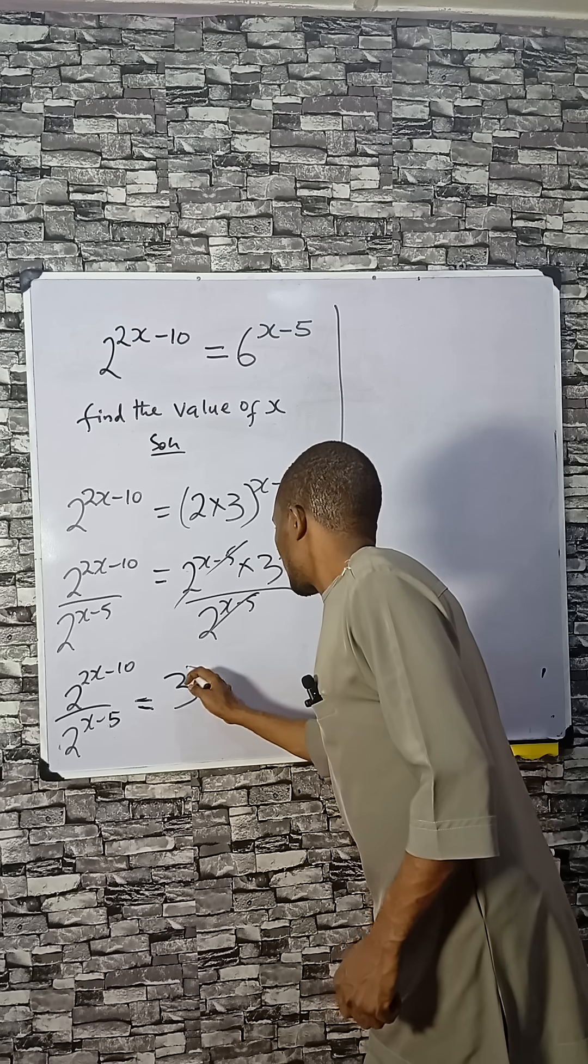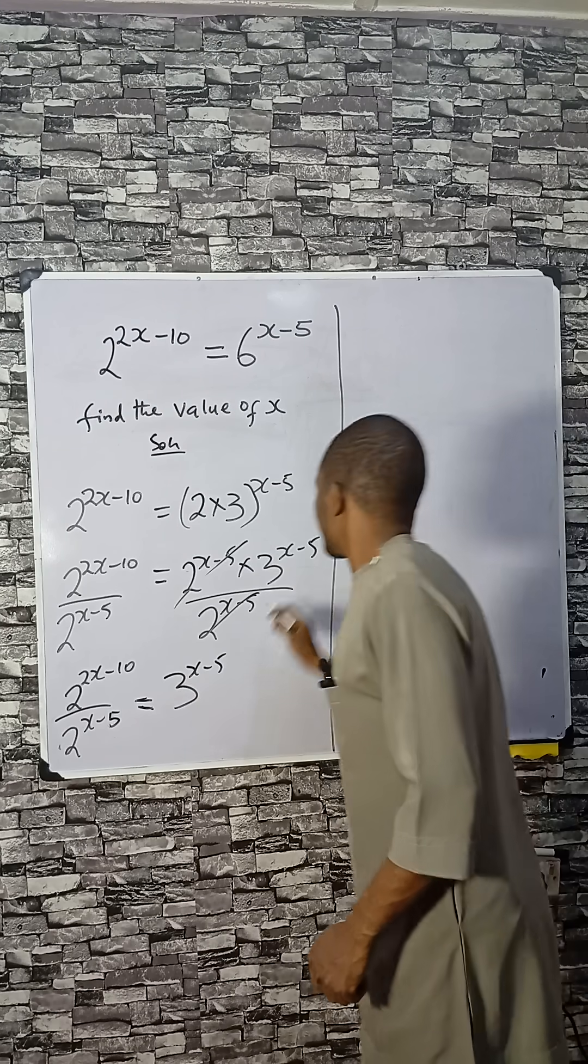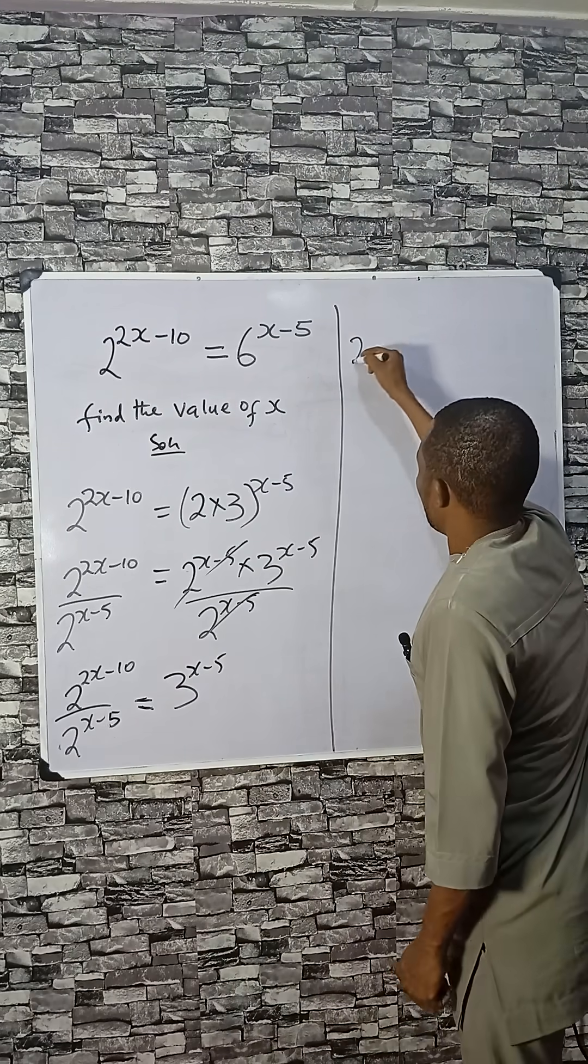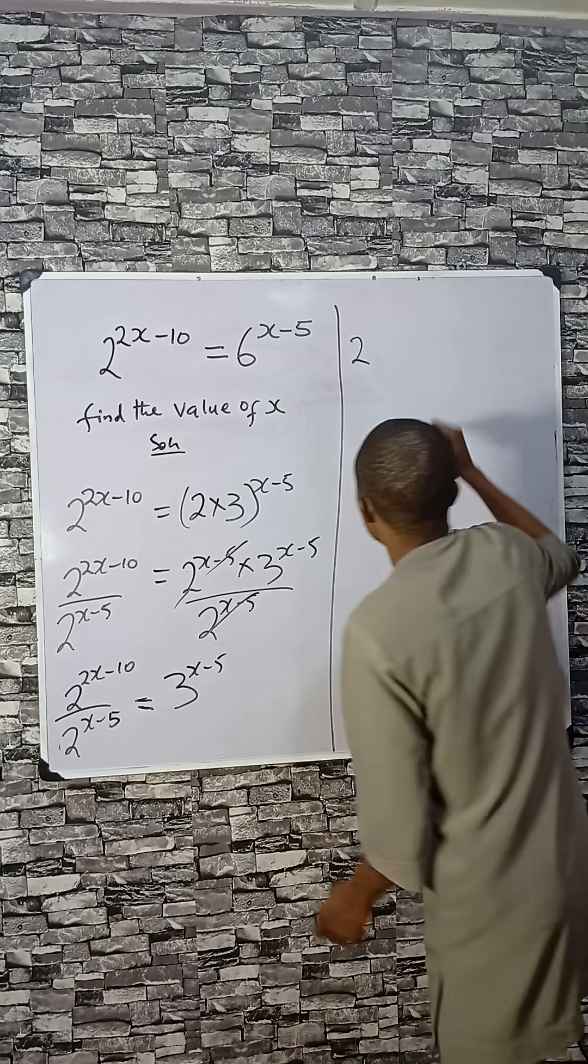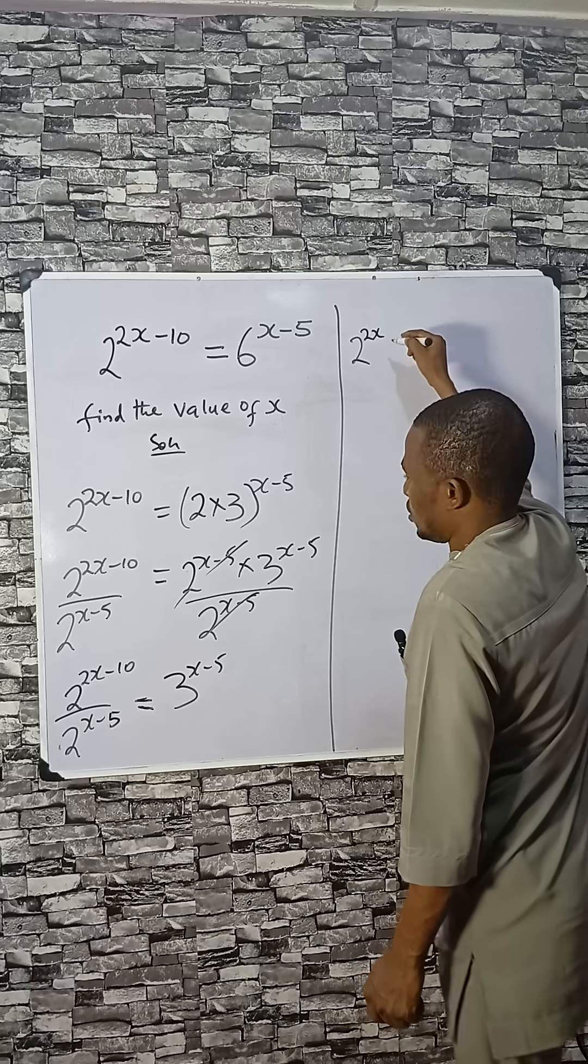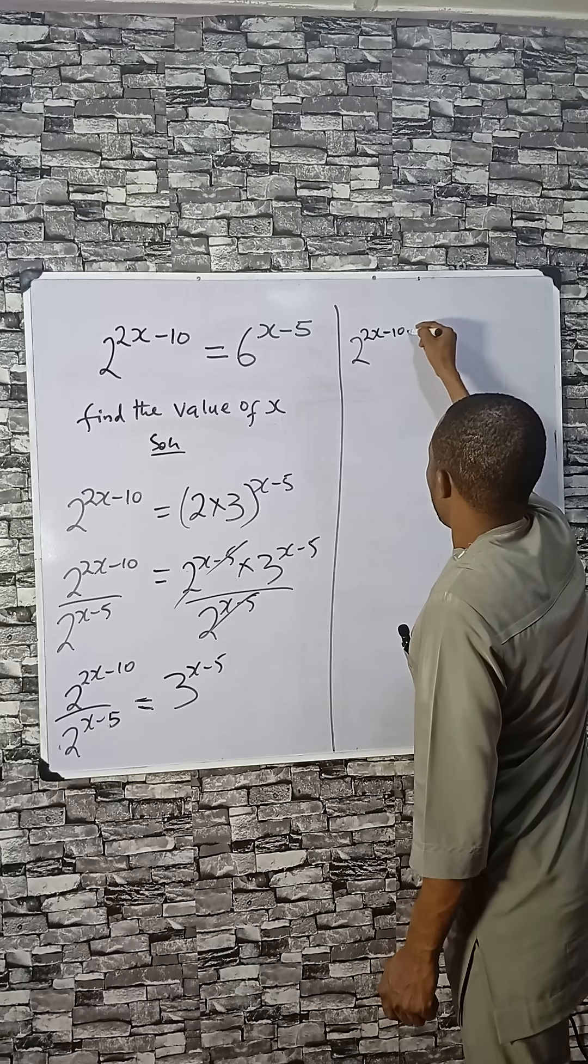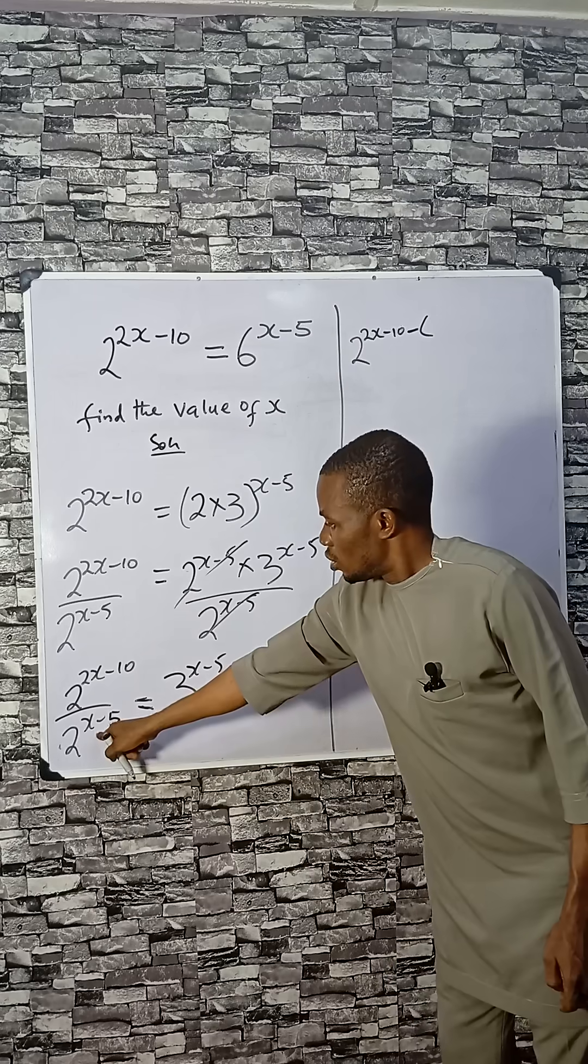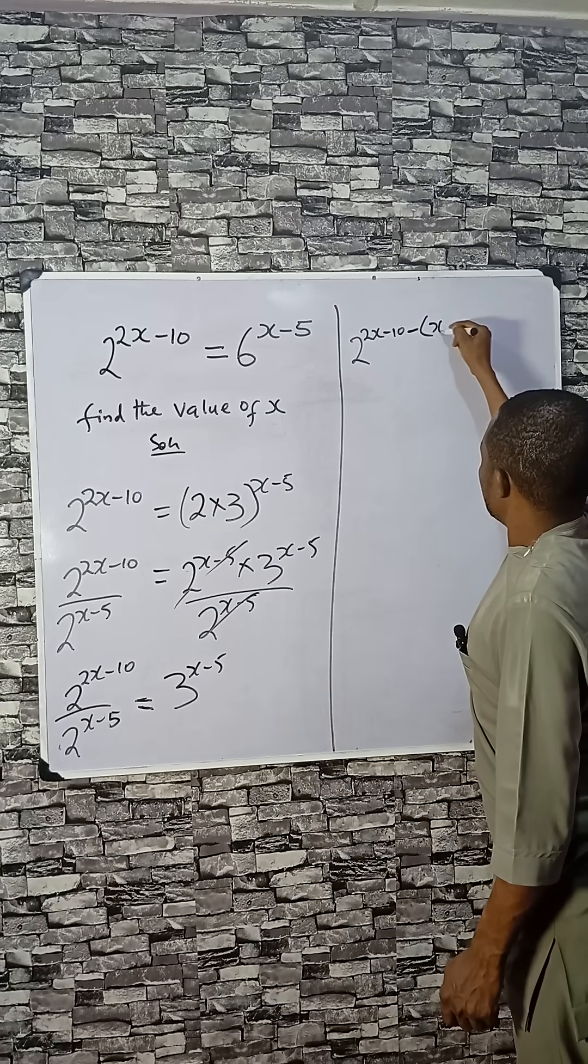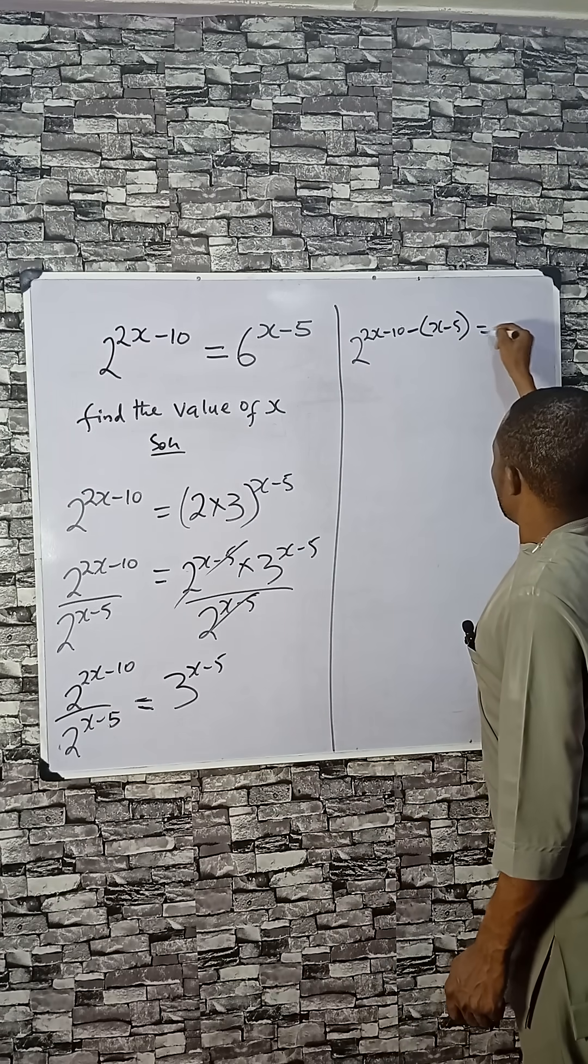Since we have the same base, we can subtract the powers: 2x minus 10 minus x minus 5 equals 3^(x-5).